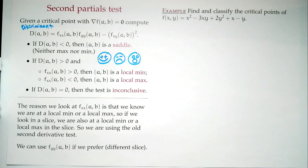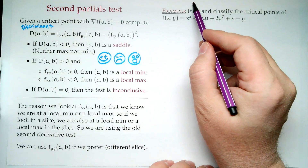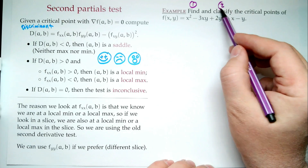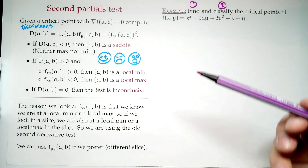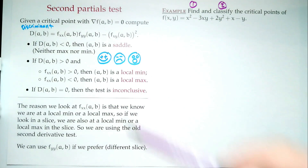Find and classify the critical points of f(x,y) = x² - 3xy + 2y² + x - y. Notice there are really two steps: find and classify — you need to do both. The finding is really going to test your algebra skills. The classify — that's the second partials test.